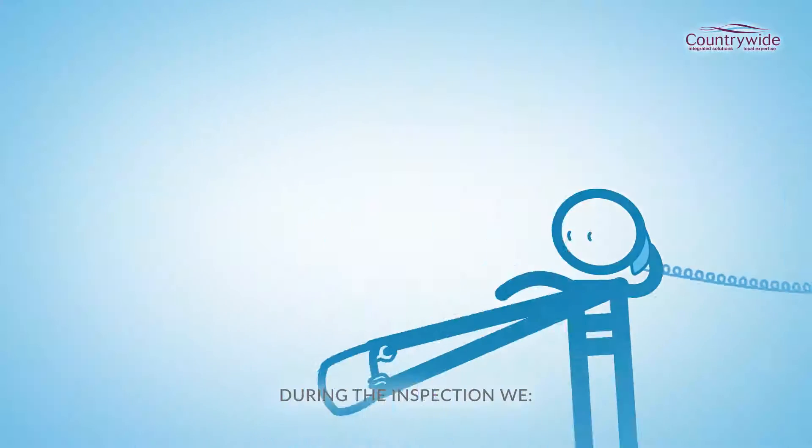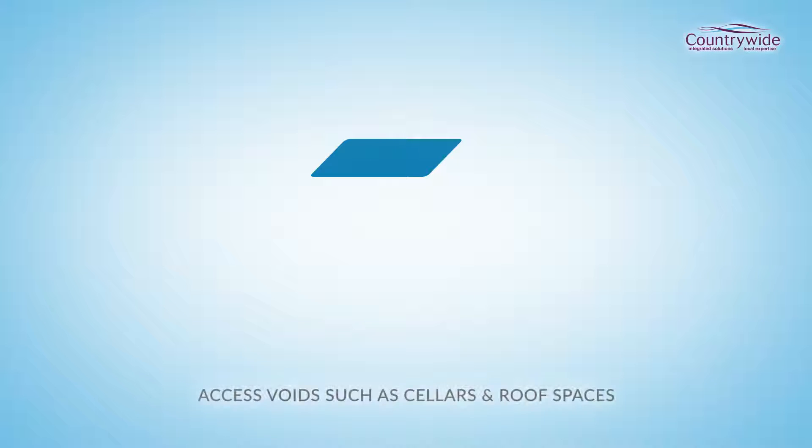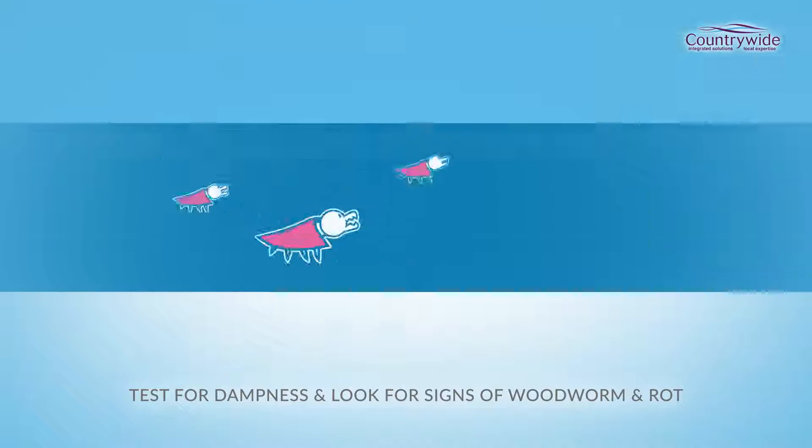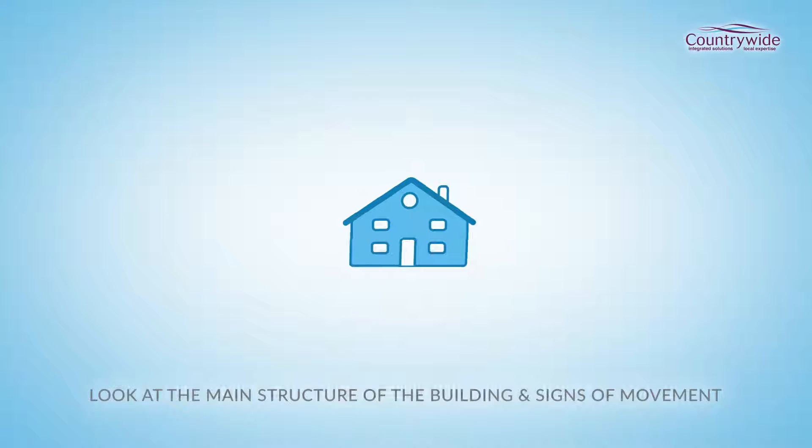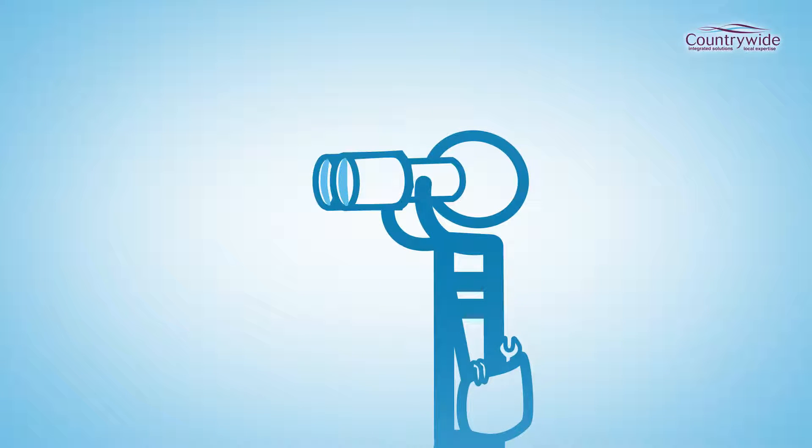During the inspection, we will report on a visual inspection of services such as heating and electrics, so it's helpful if test certificates are made available. We access voids such as cellars and roof spaces, so access also needs to be readily available. We access outbuildings if open, test for dampness and look for signs of woodworm and rot, look at the main structure of the building and signs of movement, and use ladders and binoculars to view roofs.